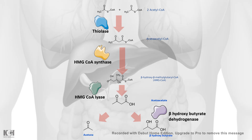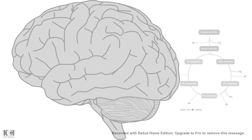These three substances can now be circulated to the brain. Let's focus on beta-hydroxybutyrate. In the fasted state, the brain is deprived of glucose, so pyruvic acid is not being converted to acetyl-CoA. Beta-hydroxybutyrate crosses the blood-brain barrier and reaches the brain, where it will be broken down to eventually produce acetyl-CoA.